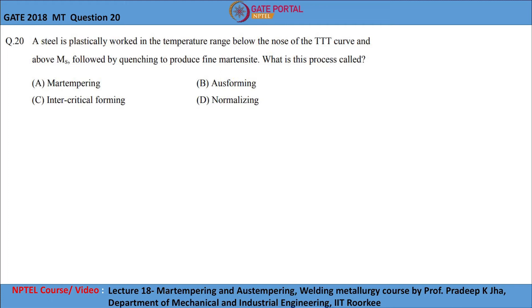Let us now solve question number 20 of GATE 2018. A steel is plastically worked in a temperature range below the nose of the TTT curve and above martensite start temperature (Ms), followed by quenching to produce fine martensite. What is this process called? The options given are: option A martempering, option B ausforming, option C intercritical forming, and option D normalizing.